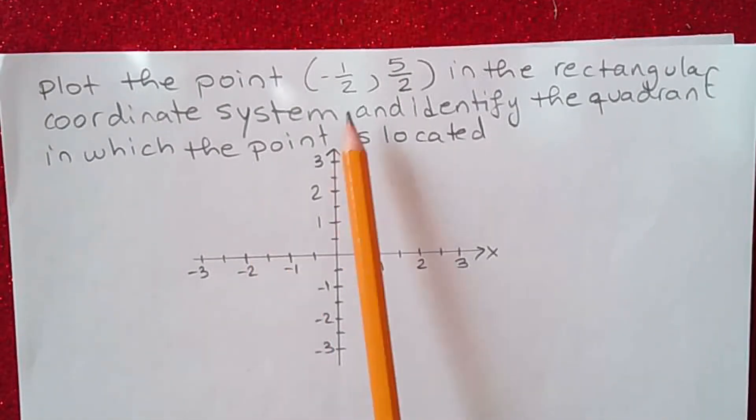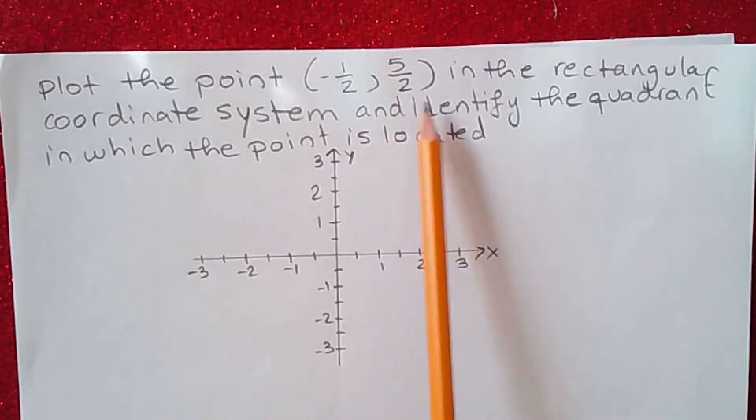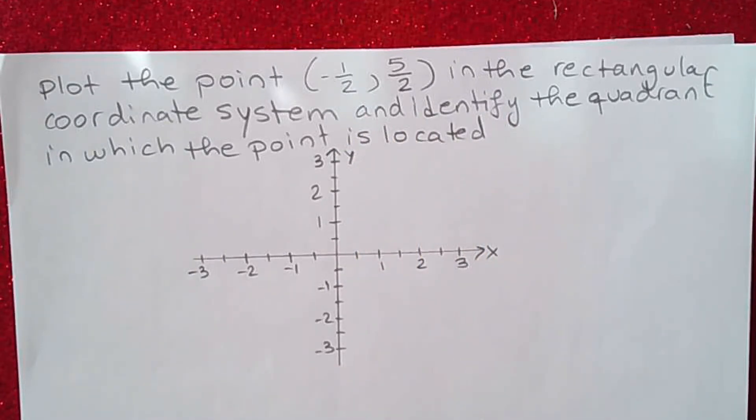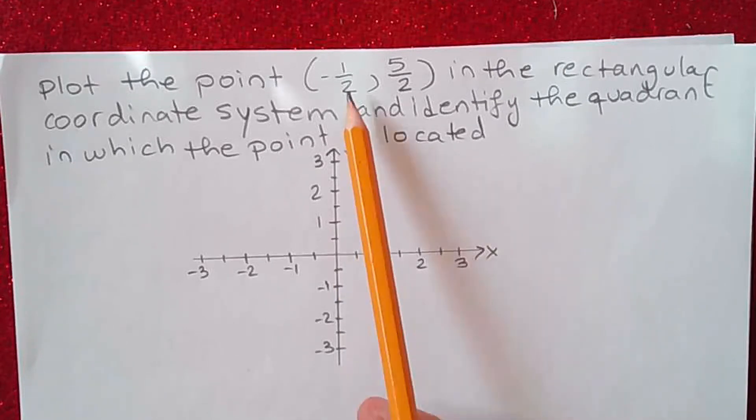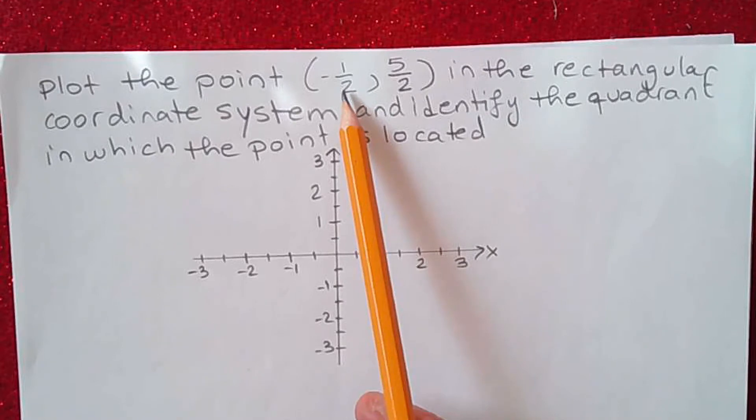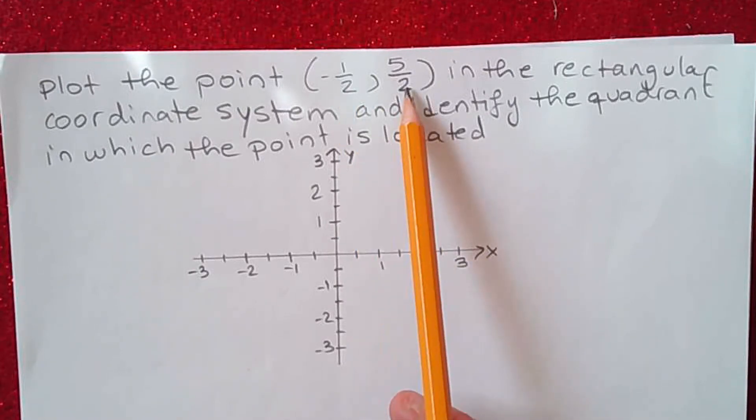Let's plot the point in the rectangular coordinate system and identify the quadrant in which the point is located. So I have x is negative one-half and y is five over two.